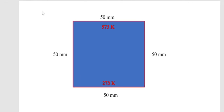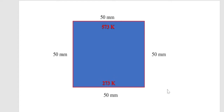In this case we are going to solve a simple 2D heat conduction problem in the OpenFOAM environment. I have taken one slab of 50 mm where the upper temperature is 573 Kelvin and the lower temperature is 273 Kelvin. We are going to see how easily you can solve this problem in OpenFOAM.